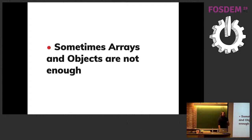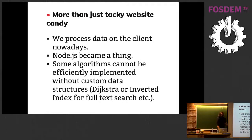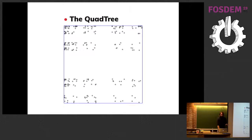The second point is that if you only use arrays and objects, you will mess up because it's not good enough. Sometimes you have to develop things that are more complex. JavaScript and the web is not something for script kiddies anymore — Node.js became a thing, we have to process a lot of data on the client. And sometimes you have algorithms which cannot be implemented without custom data structures — Dijkstra, for instance.